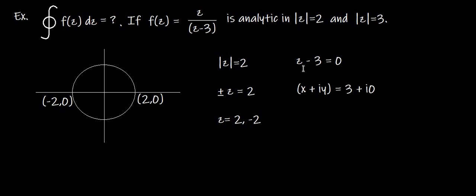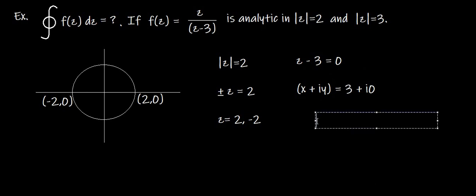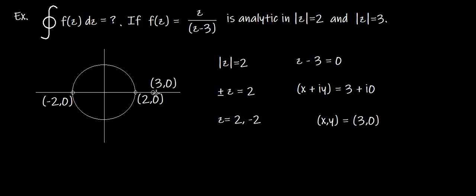Substituting z−3 = 0 gives z = 3. Writing z = x + iy, the coordinate is (3, 0). Placing this point on the graph shows it lies outside the circle of radius 2. Since we are not concerned with poles outside the closed curve, the answer to this problem is zero.